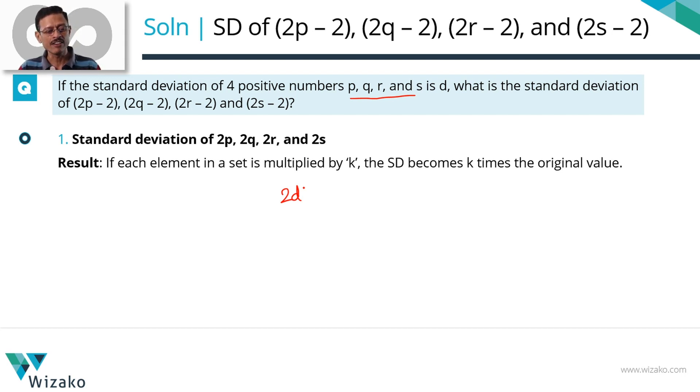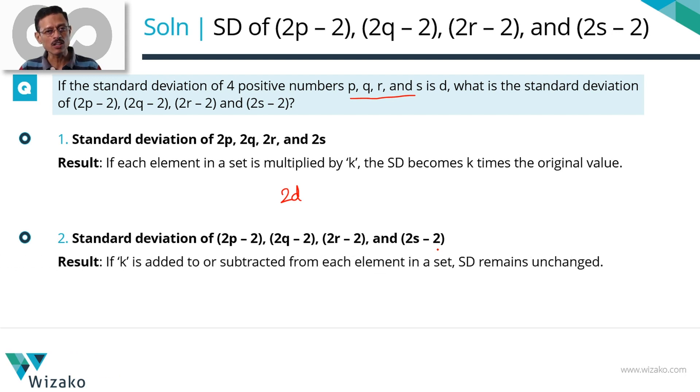Second step, let's find out the standard deviation for 2P-2, 2Q-2, 2R-2 and 2S-2. If I add or subtract a K to each element of a set, the standard deviation will remain unchanged. There will be no impact on the standard deviation.